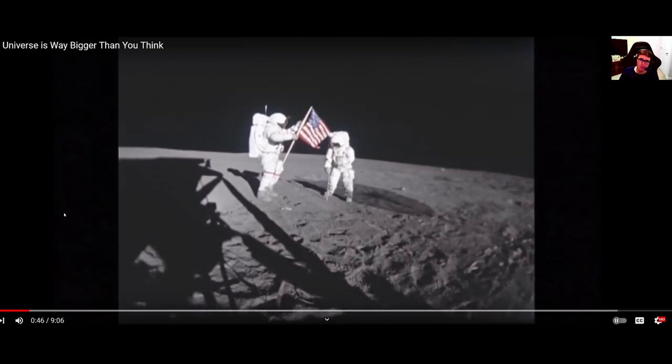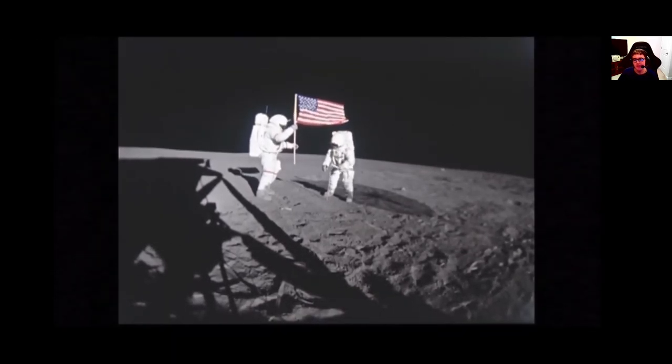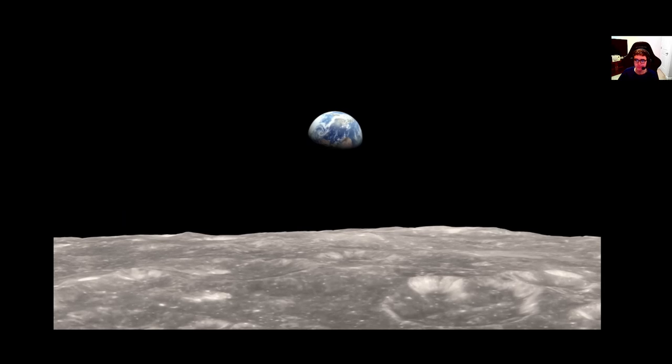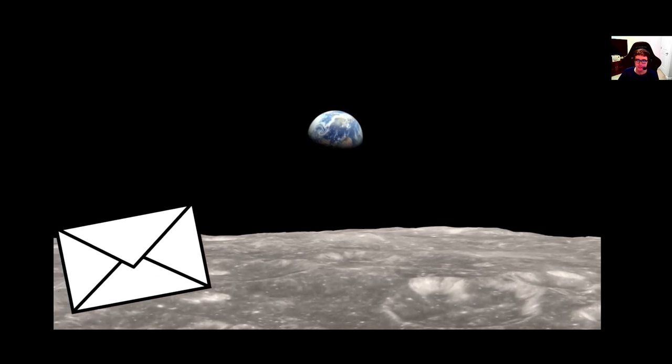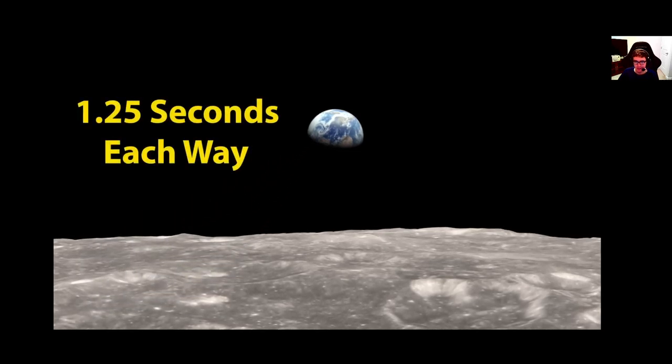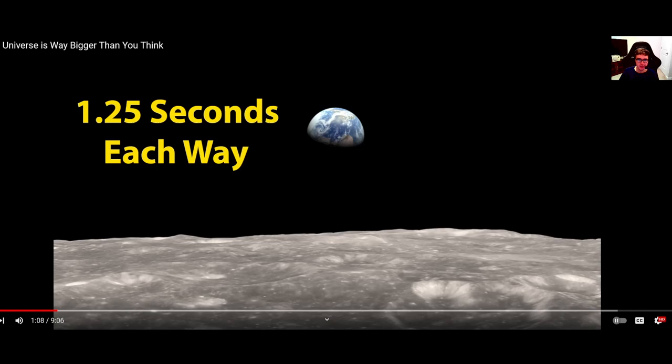However, 12 humans have actually set foot here representing the furthest away that any individual human has ever been away from the Earth. Wow. And one of humanity's greatest achievements. It's pretty crazy, man. This is what the Earth would look like from there if you were standing there with them. And if you wanted to communicate with somebody back at home, it would take a message about two and a half seconds to travel between you and them since that's how fast the speed of light can travel at. That's pretty crazy.